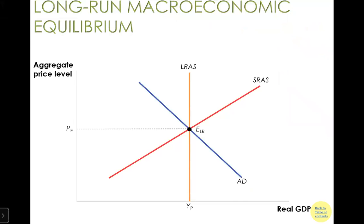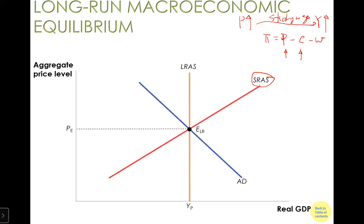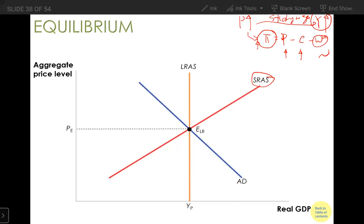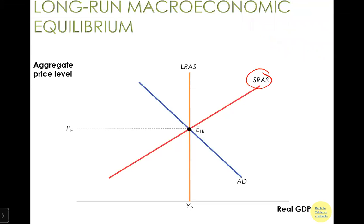Next, we look at aggregate supply. Short-run aggregate supply tells us: if price increases, output will eventually increase. The link between these two is through sticky wages. Sticky wages increase profit: pi equals price of the goods you sell minus cost minus wage. If there's inflation, the price increases but the wage stays the same. That explains why higher price or inflation leads to higher profit. Higher profit gives firms the incentive to expand — that's why higher price leads to higher goods supply, and why the short-run aggregate supply curve is upward sloping.